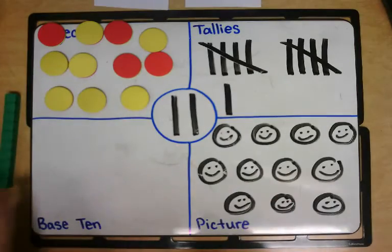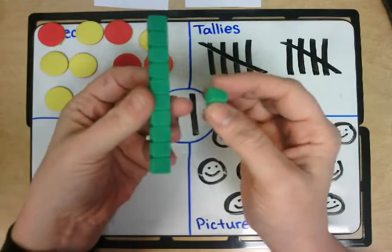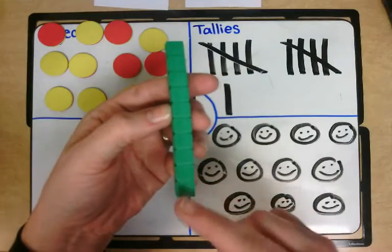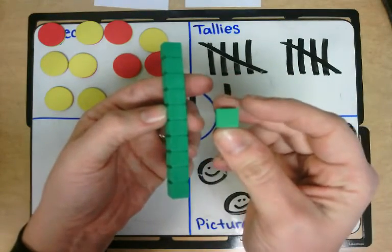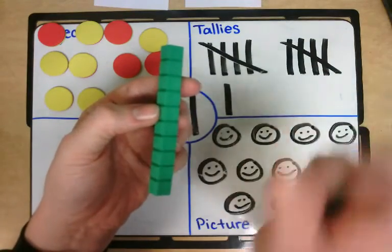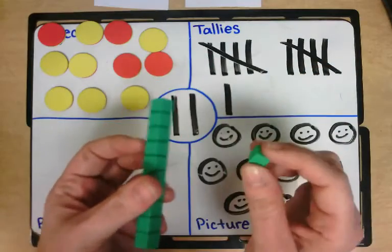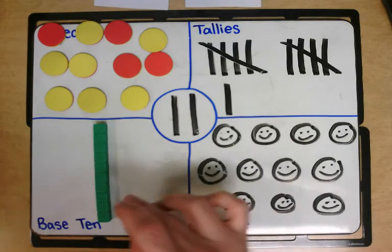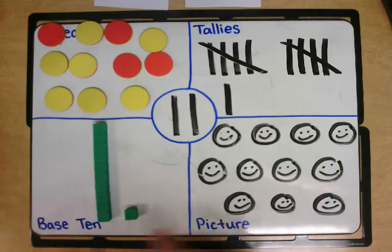We could also represent the number eleven using our base ten. Now I showed you these a long time ago during calendar. Base ten has got a long which has got ten cubes stacked up. It also has just single cubes which represent the number one. There is even more that represent one hundred or even one thousand, but we're not going to look at those today because we don't need them for eleven. So if we were going to represent eleven using the base ten blocks we would have one long and then one more cube. So ten and one more equals eleven.